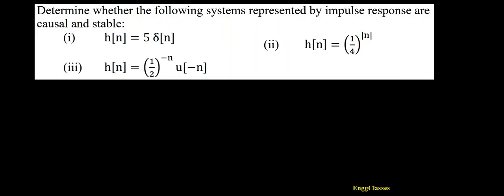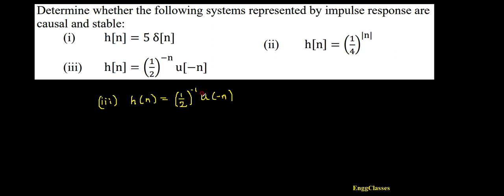Hello everyone, welcome to NG Class's YouTube channel. In this video lecture, we will determine whether the given systems represented by the impulse responses are causal and stable. We have considered the first two numericals in the previous video lecture. In this video lecture, let me consider the third numerical wherein the impulse response H of n is equal to 1 divided by 2 to the power minus n, multiplied by U of minus n. Is this system causal and stable?